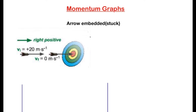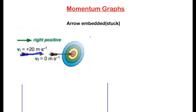Good day folks, welcome to my YouTube channel. Today we're going to look at momentum — specifically the graphs of momentum. We have an arrow and a target. The arrow is traveling at a speed of 20 meters per second to the right — we choose right as positive. Its initial velocity is 20 m/s and its final velocity is zero because it gets stuck in the target.